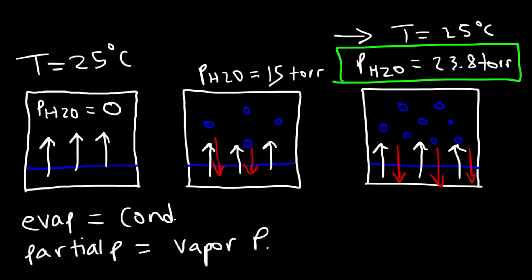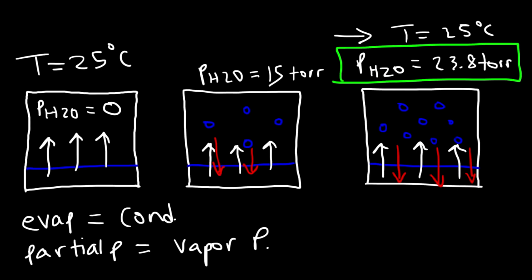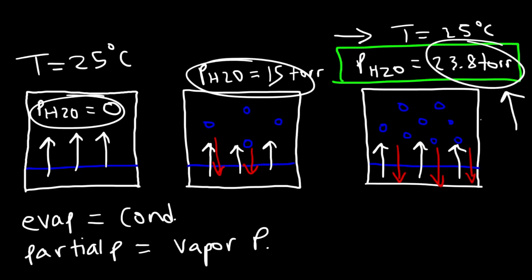It's important to distinguish the partial pressure of water from the vapor pressure of water. The partial pressure of water can have many values — it can be zero, 15, 23.8, 100, 500, or 45.73. However, the vapor pressure of water has a specific value at a given temperature. The vapor pressure is a specific partial pressure value at which the rate of evaporation equals the rate of condensation.